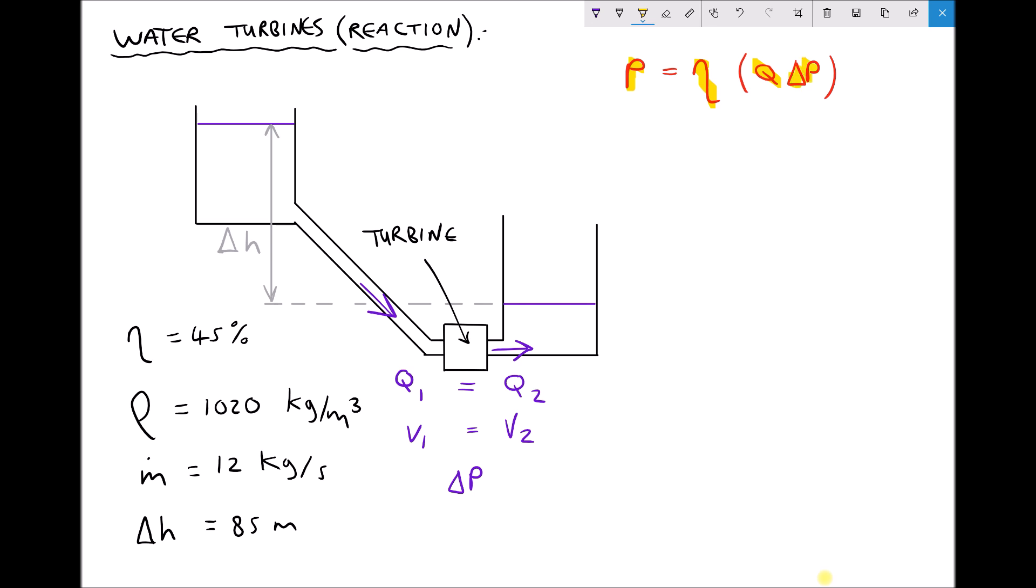Now the formula that we see here is actually derived from the power output equation that we saw in the previous video. If we were to substitute in terms for volume flow rate and change in pressure we would arrive back at the power output equation. What that means is that our efficiency is equivalent to the coefficient of power in the turbine power output equation that we saw previously.